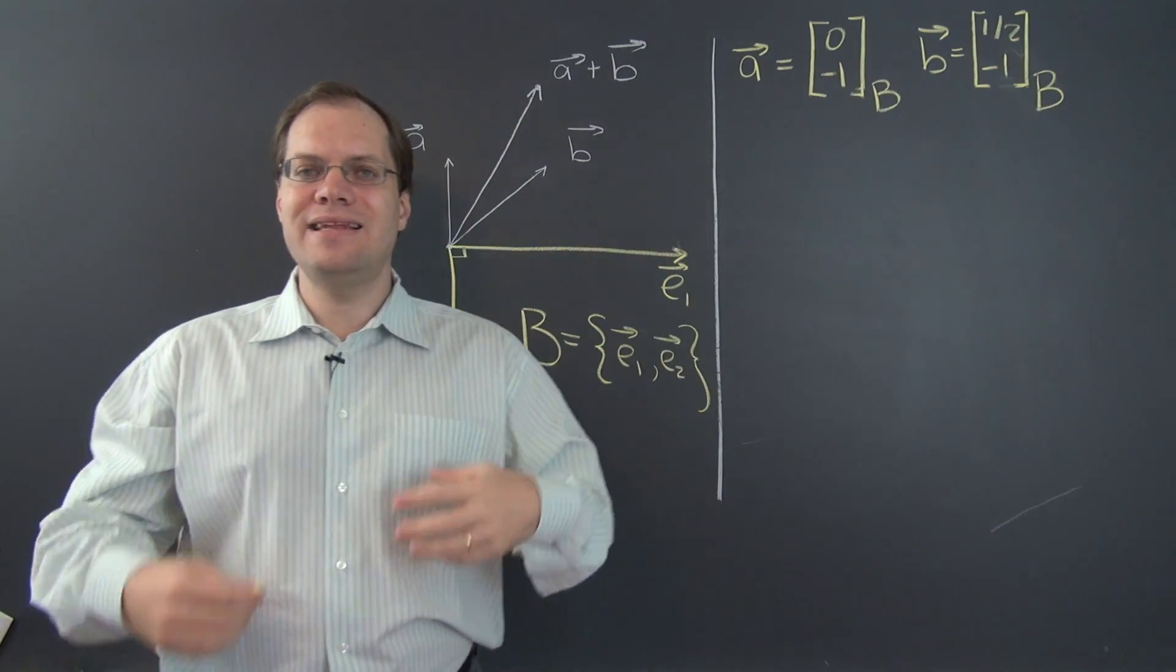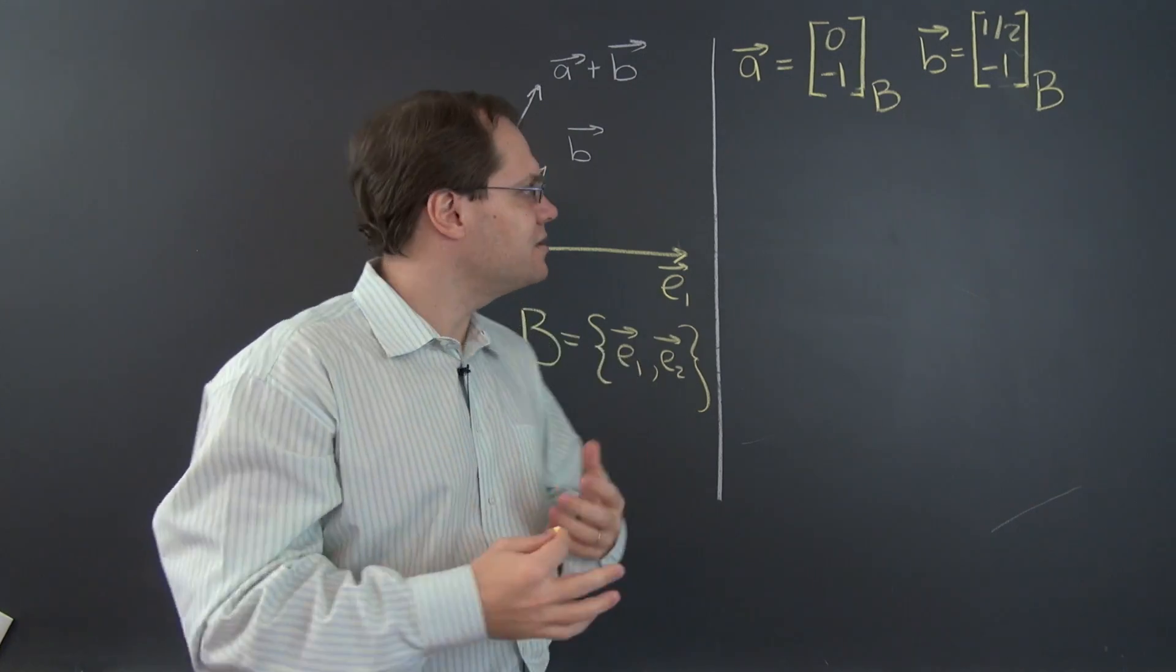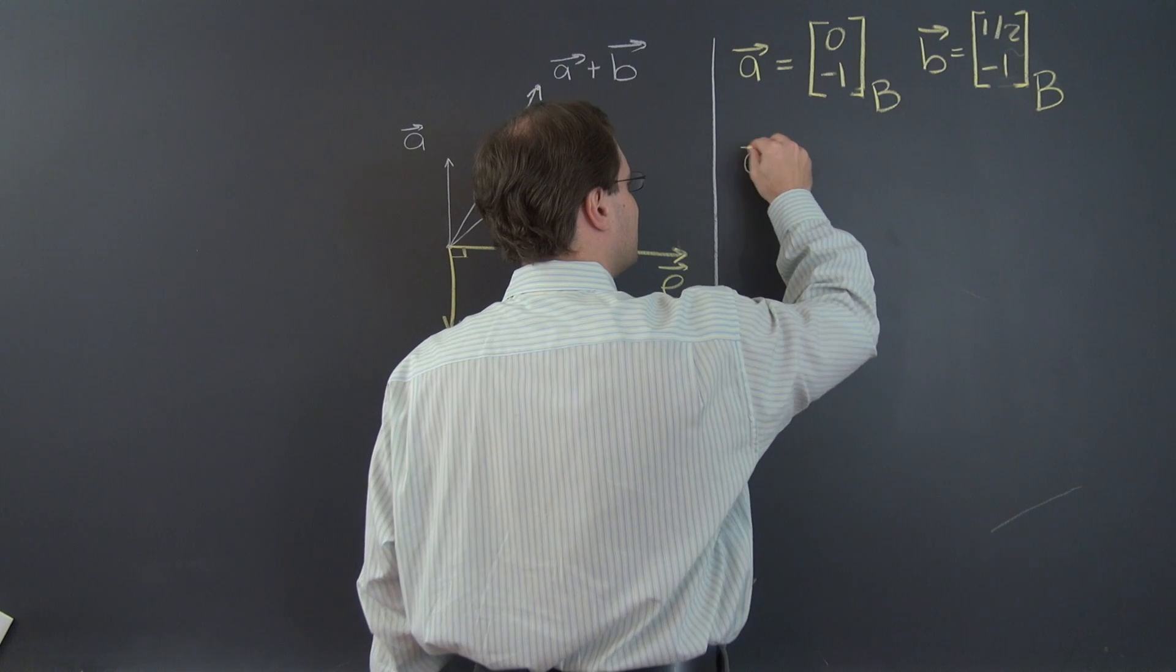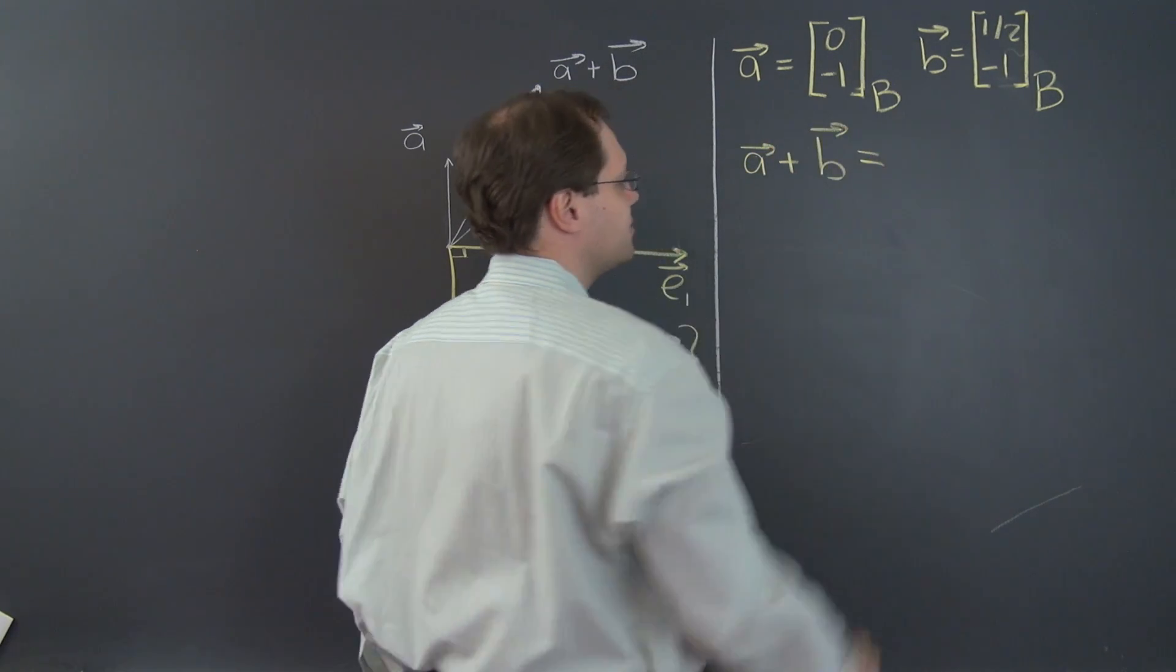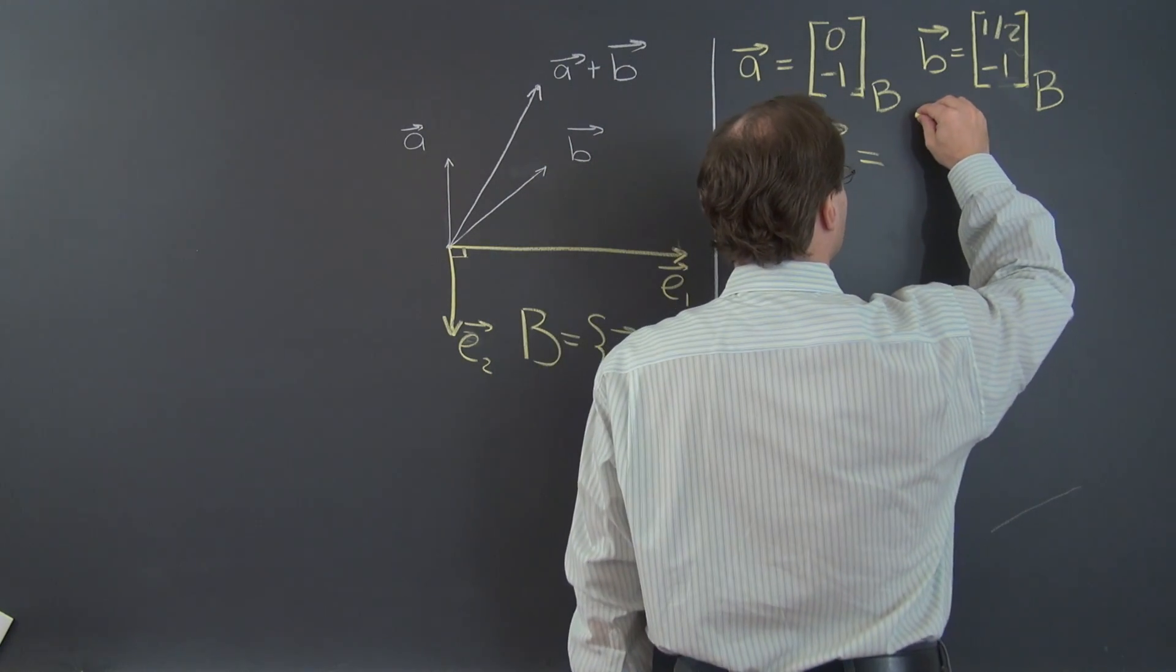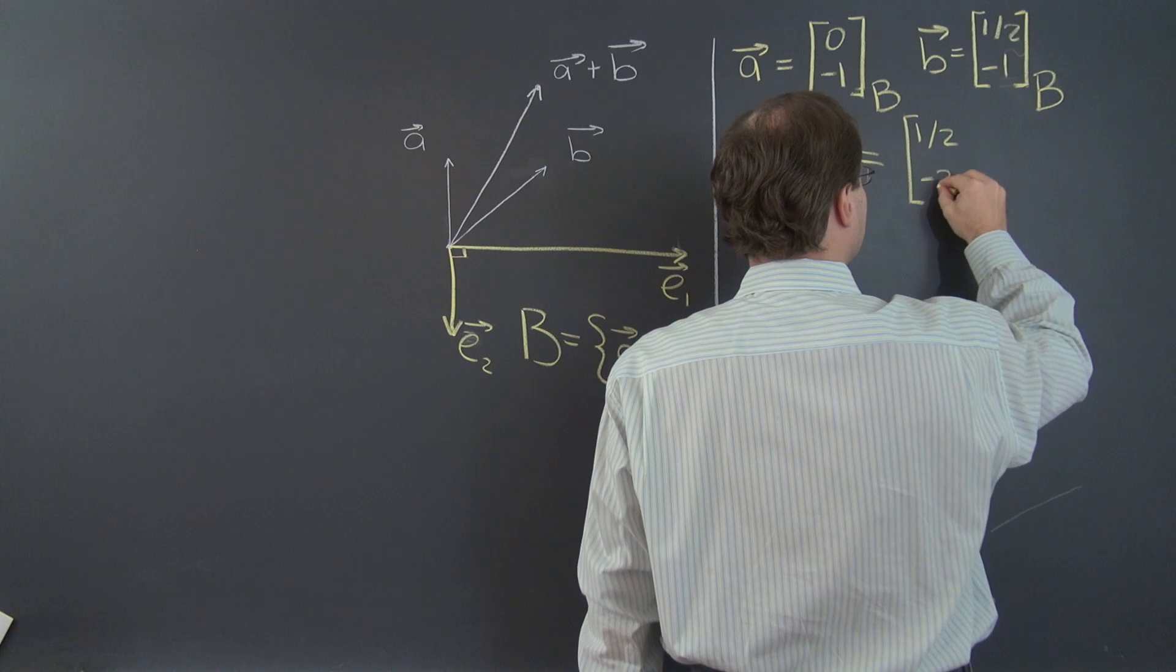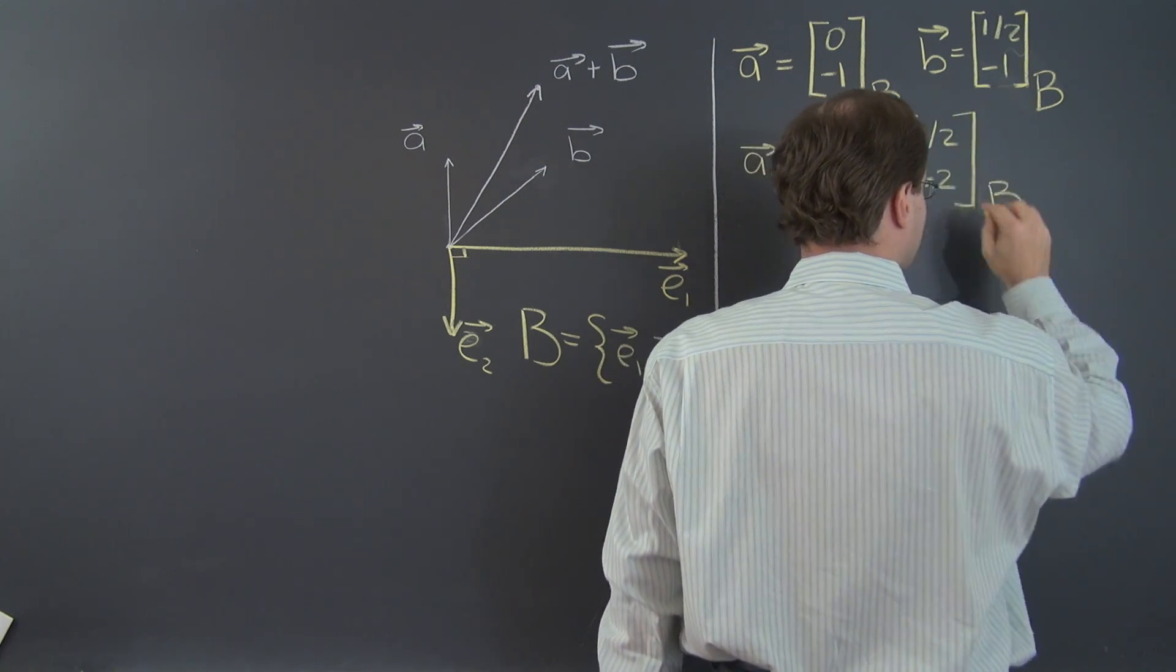We can now add A and B in the component space. So here's an operation purely in the component space. A plus B equals, I don't think we need to write down this plus this, we can just do it in our heads, and it's 1 half negative 2.